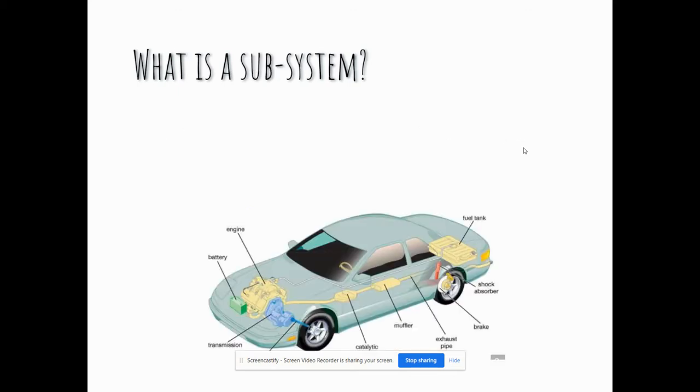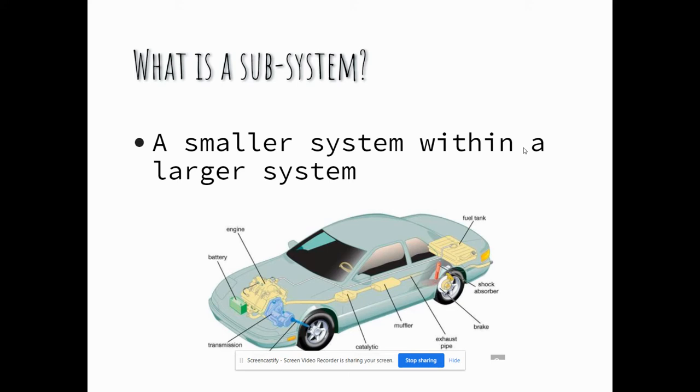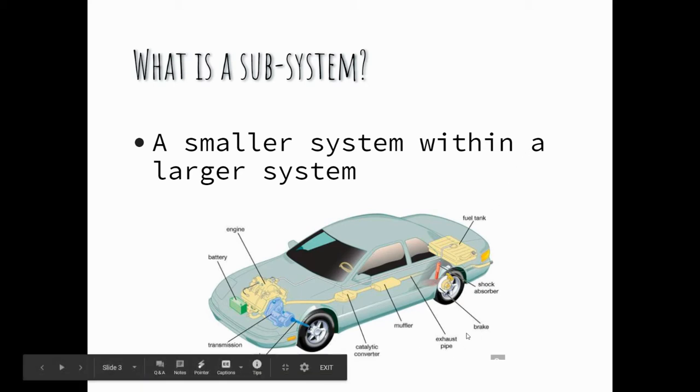What is a subsystem? A subsystem is a smaller system within a larger system. For instance, in this particular car example, the car as a whole is a system, while all these other smaller systems are called subsystems.